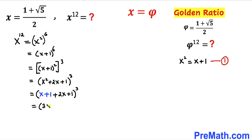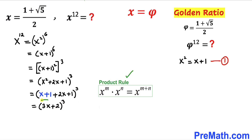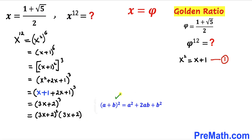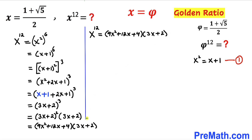Now let's recall the product rule of exponents and apply it: (3x plus 2)^3 can be written as (3x plus 2)² times (3x plus 2). Applying the identity (a plus b)² to the first part gives us 9x² plus 12x plus 4, multiplied by 3x plus 2.